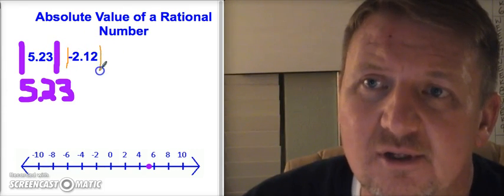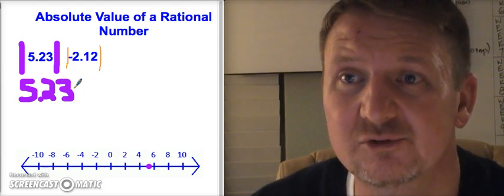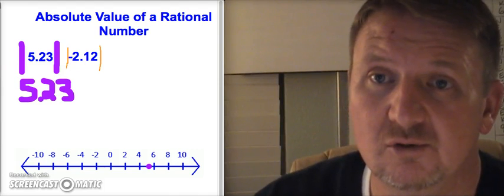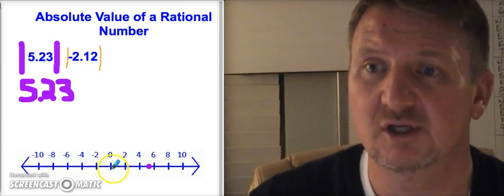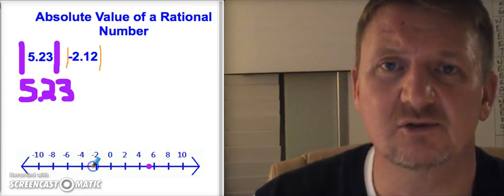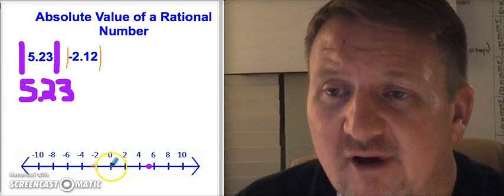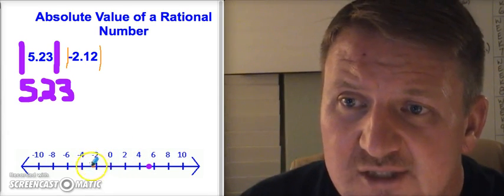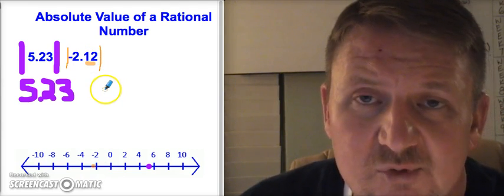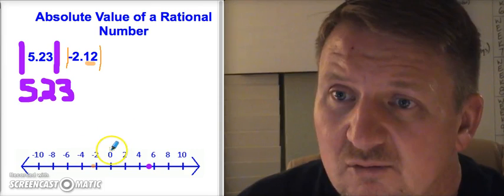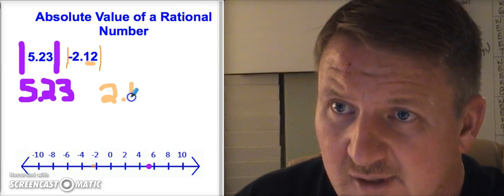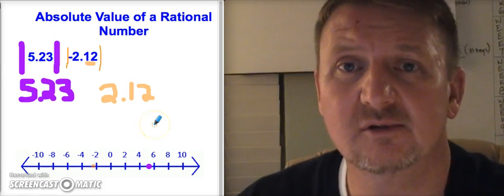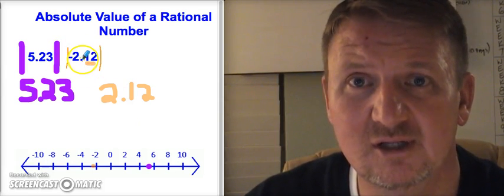Now for the absolute value of negative two and 12 hundredths. I go to negative two and then just a little bit past it. I find out how far that is from zero — it is two places plus that little extra, which is 12 hundredths of a unit. So the absolute value of negative two and 12 hundredths is two and 12 hundredths.